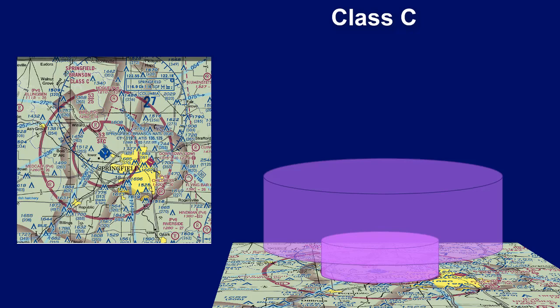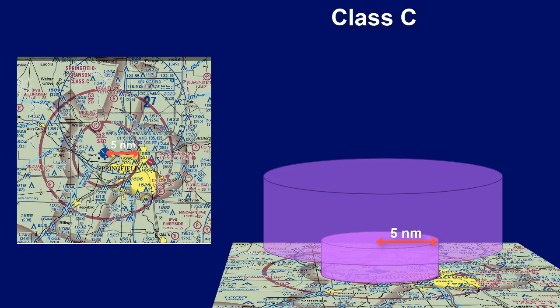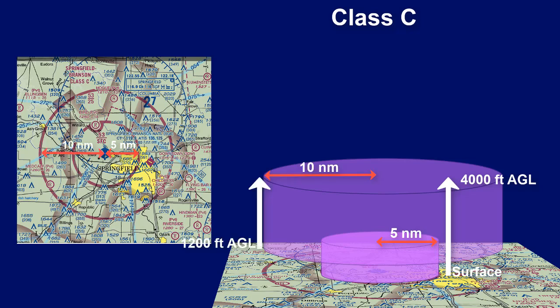Class C airspace is towered airspace which has two levels shown on the chart as solid magenta rings. The lower level has a 5 nautical mile radius and starts at the surface, rising to 4,000 feet above ground level. Then there's a shelf that has a 10 nautical mile radius, starting at 1,200 feet above ground level and reaching the top at 4,000 feet above ground level.